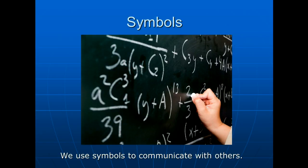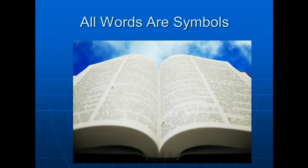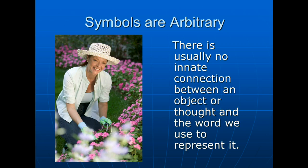We use symbols to communicate with others. All words are symbols and often arbitrary. Think for a moment of the word 'chair.' What does that sound and those letters — C-H-A-I-R — have to do with the object? Nothing. We could have called 'chair' dog and 'dog' chair. There is usually no innate connection between an object or thought and the word we use to represent it.